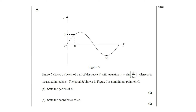Question number 9. A figure is given. Figure 5 shows a sketch of part of the curve C with the equation y equals sin(x/12), where x is measured in radians. The point M shown in the figure is a minimum point on C. Part A: state the period of C. Part B: state the coordinates of M.